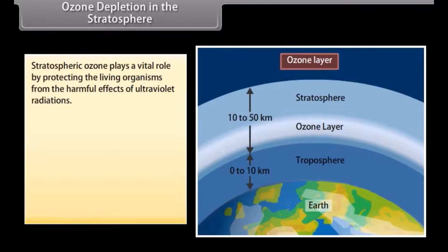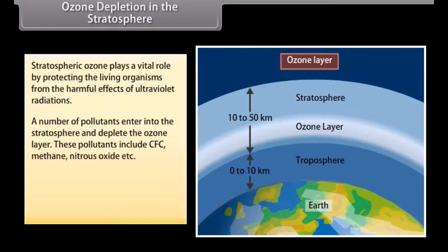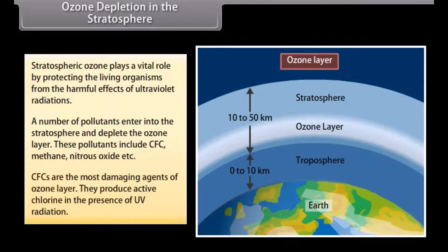Ozone depletion in the stratosphere: stratospheric ozone plays a vital role in protecting living organisms from the harmful effects of ultraviolet radiation. A number of pollutants enter the stratosphere and deplete the ozone layer. These pollutants include CFCs, methane, and nitrous oxide. CFCs are the most damaging agents of the ozone layer; they produce active chlorine in the presence of UV radiation.